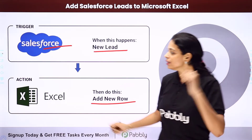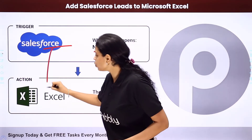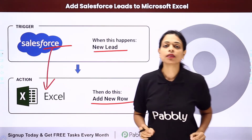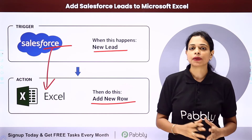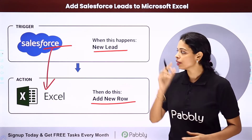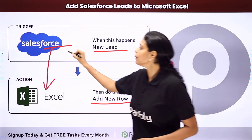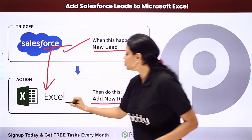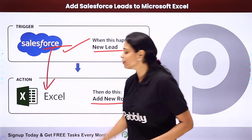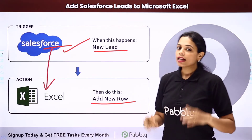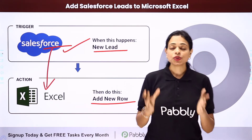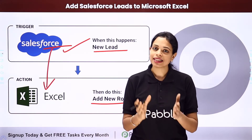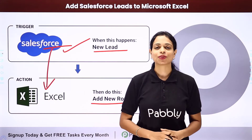How can you do this? By integrating these two applications, and the same can be done using Pably Connect software. Your trigger application would be Salesforce and your action application would be Microsoft Excel. To understand how you can do this yourself, let me take you to my screen.